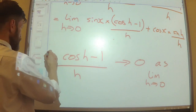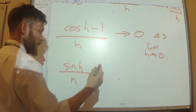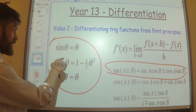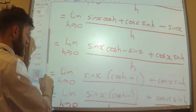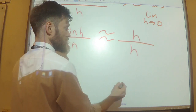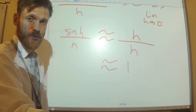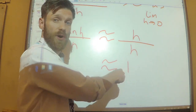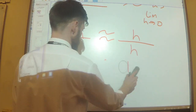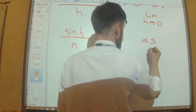Over here we have sine h over h. As a small angle approximation, sine h approximates to h. So sine h over h is approximately h over h, which is 1. In the limit as h tends towards 0, this will still be 1. So this limit becomes 1 — it tends towards 1 as h tends towards 0.